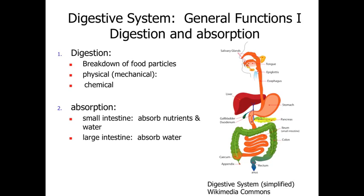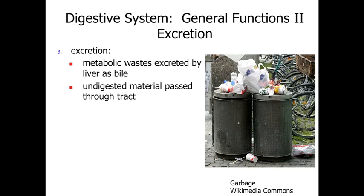Complementing the process of digestion is absorption. In the process of absorption, we take materials passing down through the tubular organs of our digestive tract, take them from the lumen of the digestive tract — which is physiologically equivalent to the outside world — and bring them from the lumen across the epithelial lining and into the body proper. That process of absorption occurs primarily within the small intestine, where we absorb nutrients as well as water, and within the large intestine, where we absorb water that has been added to the digestive system along the way.